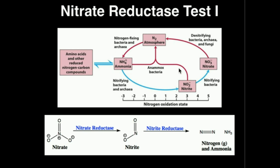In this figure here on the top, we see some components of the nitrogen cycle on Earth. Specifically, the nitrate reductase test is looking at a component of denitrification, which is shown here on the upper right. In the process of denitrification, nitrate can be converted to nitrogen gas, which diffuses into the atmosphere. The atmosphere that we breathe is actually about 70% nitrogen gas, and this is accomplished in part by denitrifying bacteria.